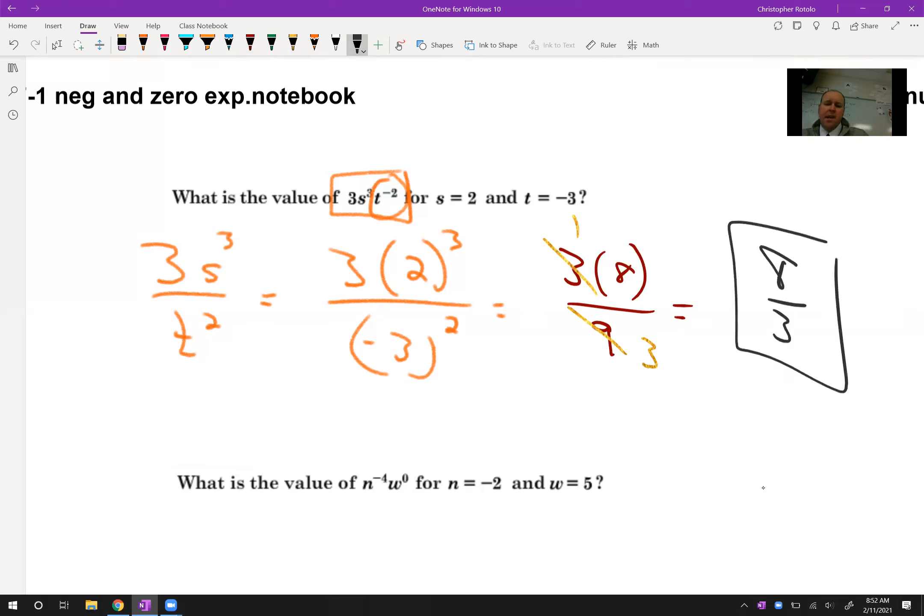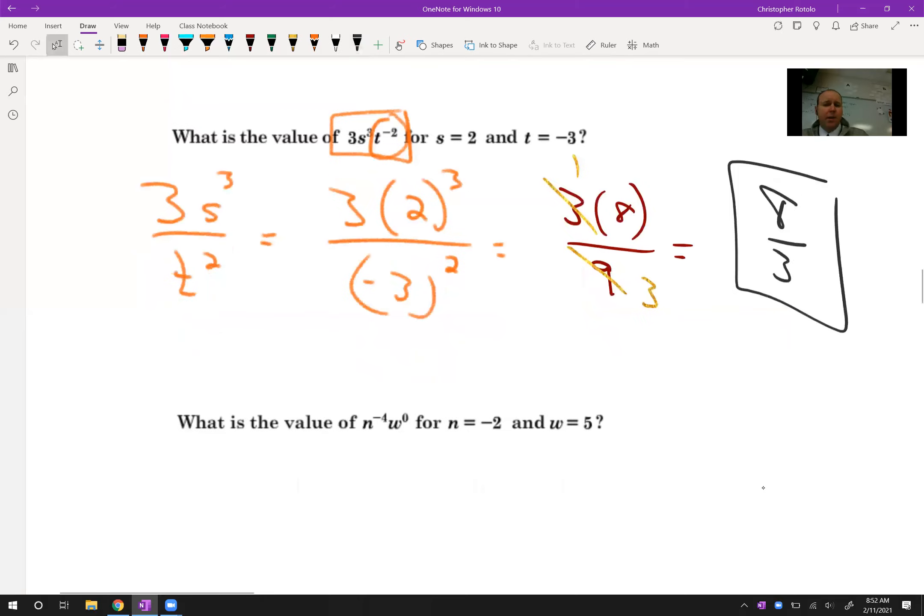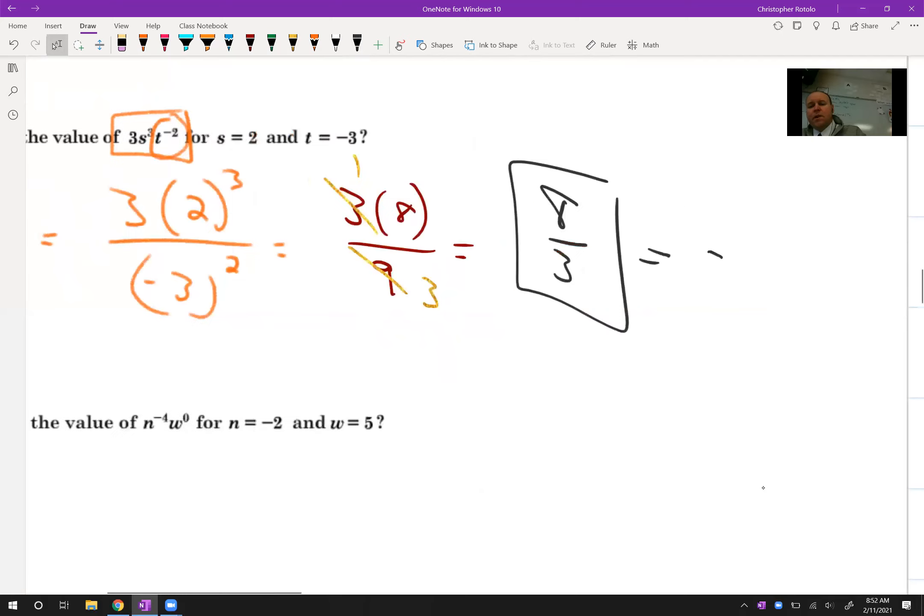Alright, we'll take that. If it's multiple choice and you have to match it, remember that would be 2 and 2 3rds. Because I can get 2 of these gets me to 6, and there's 2 left over. 2 and 2 3rds.